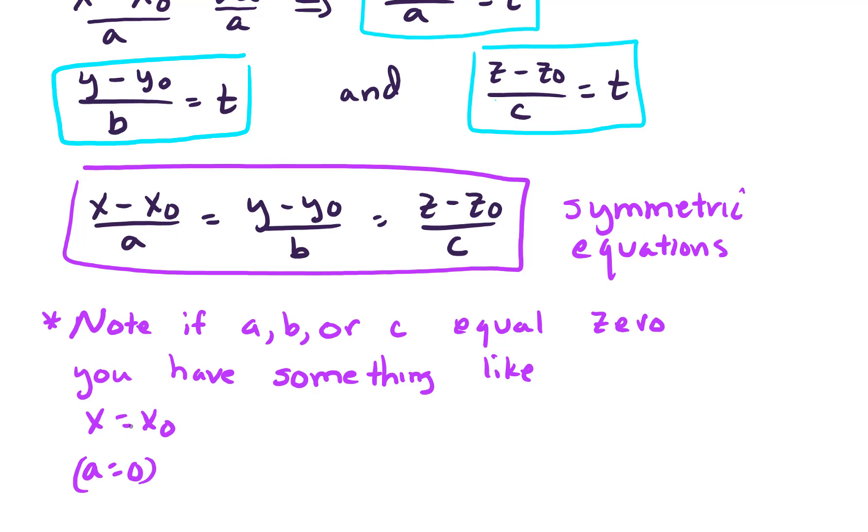And then you would write your Y minus Y-naught over B equals Z minus Z-naught over C. And this would give you some sort of plane. And that doesn't always happen, but if you get that case, you know how to handle it.